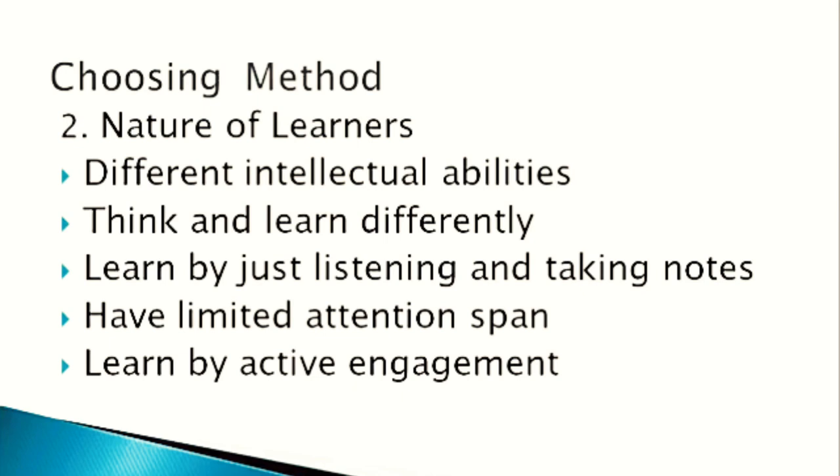But content is not the only factor — there is also the nature of learners. As we know, everybody has a different learning style. Children learn differently and have different intellectual abilities. Some children learn better by listening and taking notes, some when they observe carefully, and some have a knack for experimentation. So it is always a good idea to use a variety of methods for teaching EVS. Children in the primary age group have limited attention span, so it is advised to arrange activities where they are actively engaged.